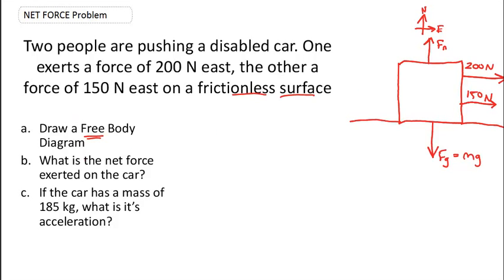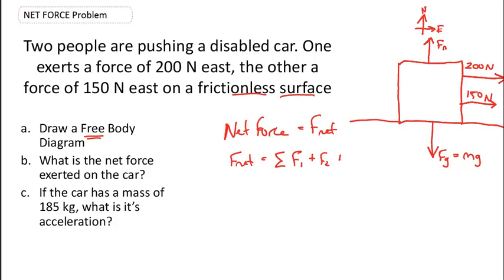The question is asking: what is the net force exerted on the car? This car is not going to accelerate upward or downward because the normal force and the force of gravity cancel each other out. The F net is equal to the sum of all the forces — F1 plus F2 plus F3. It takes into account every single force, but it considers the x and y axes individually.